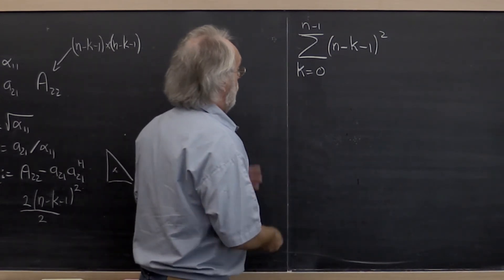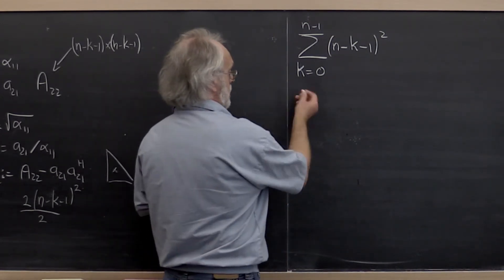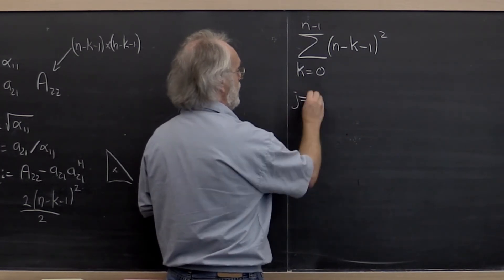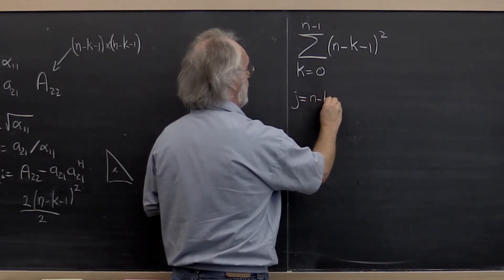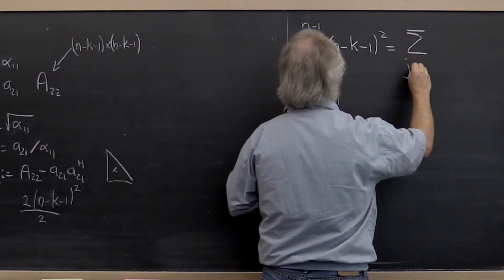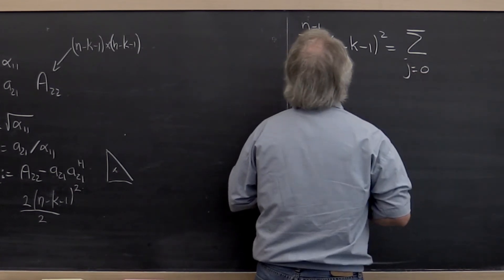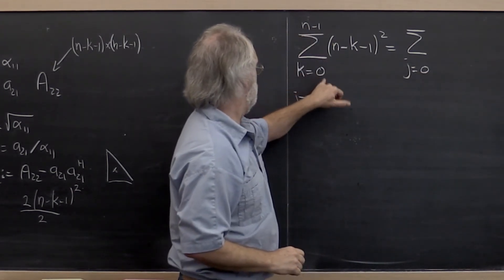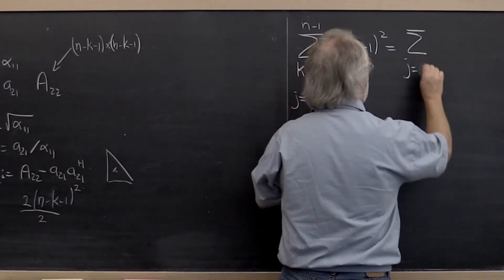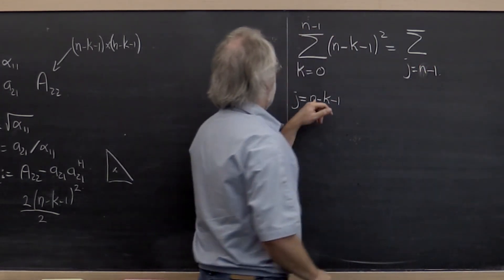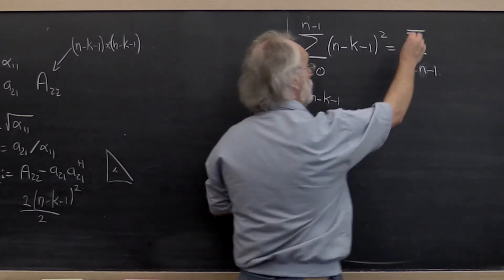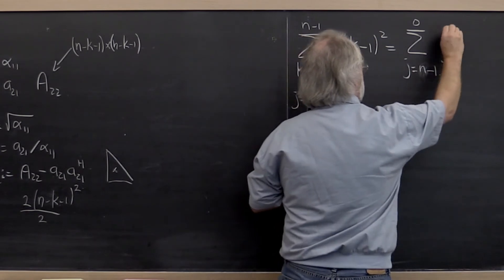Then what we can do is say, well, if we do a clever substitution, change a variable where we say j is equal to n minus k minus 1, then we can write this as the sum from j equals 0. When k is equal to 0, j is equal to n minus 1. So we'd have to go from n minus 1 and when k is equal to n minus 1, j is equal to 0 of j squared. But we kind of prefer writing our sums going forward, incrementing at every step so we can write that as such.